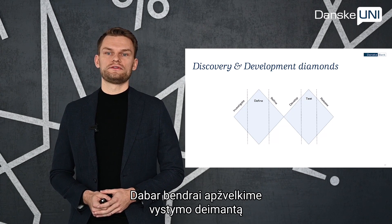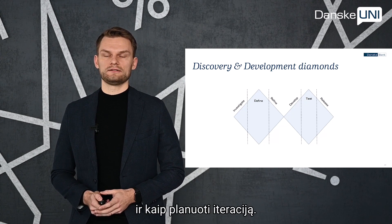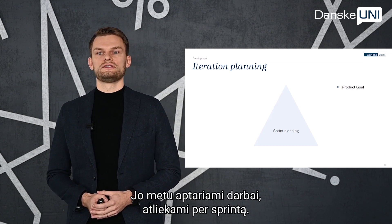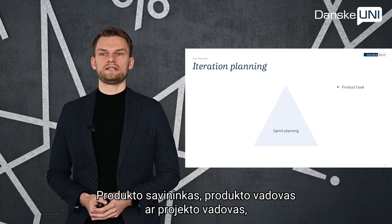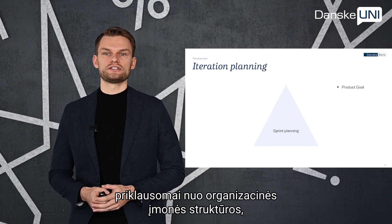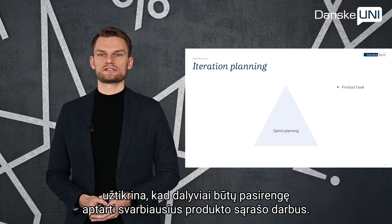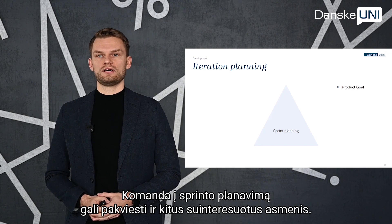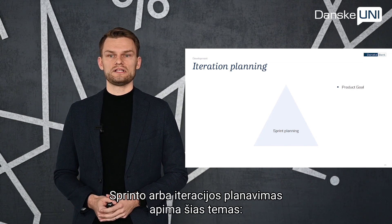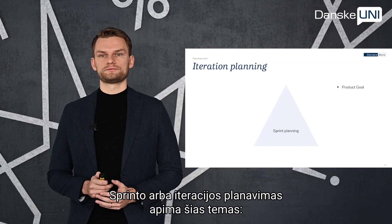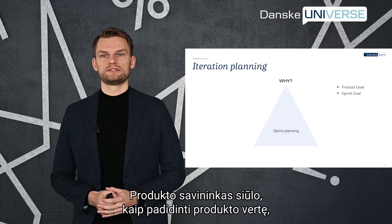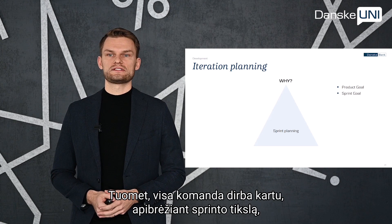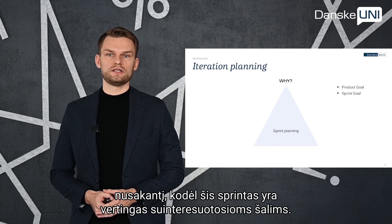Now let's take a high-level overview of the development diamond and how to do iteration planning. Iteration planning in Scrum is called sprint planning, and it is initiated by laying out the work to be performed for the sprint. The product owner, product manager, or project manager, depending on the organizational structure, ensures that attendees are well prepared to discuss the most important product backlog items and how they map to the product goal. The team may also invite other stakeholders to provide advice. Sprint planning addresses the following topics. Topic one: why is this sprint valuable? The product owner proposes how the product could increase its value and utility in the current sprint.